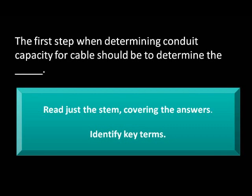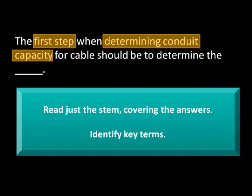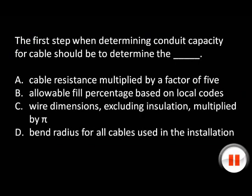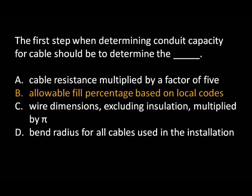Let's take a look at another example question from the official CTSD practice exam. First we'll look at the question by itself: the first step when determining conduit capacity for cables should be to determine the blank. Look at the keywords — this question is asking you for the first step to determine conduit capacity. The answer options may list other important steps in this process or other considerations relating to pulling cable, but you shouldn't care. Pause now to choose an answer. The correct answer is B, allowable fill percentage based on local codes. Did you see the answer you were expecting among the answer choices? You might have expected to see 'number of cables' among the answer choices, because you often need to know how many cables you're pulling in order to determine the allowable fill percentage. Since it wasn't there, you have to go with the best answer choice among what's listed.